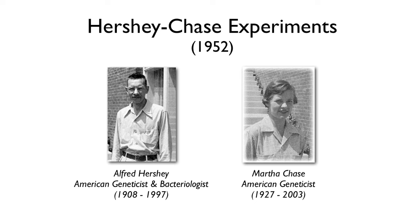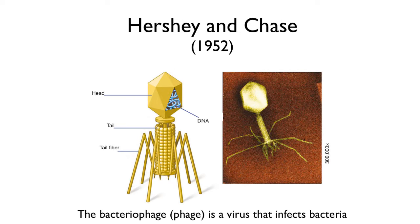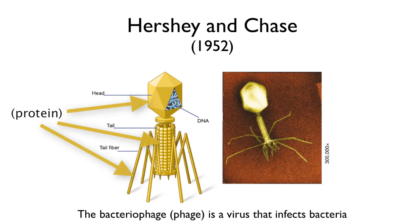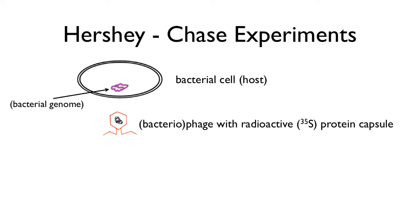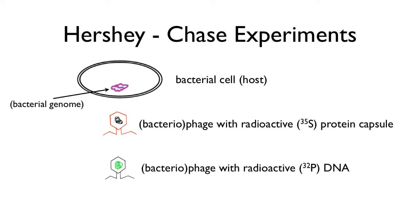Meanwhile, Hershey and Chase had some remarkable experiments going on with phages. Bacteriophages are viruses that infect bacteria — made of either DNA or sometimes RNA, with the rest of the phage made of protein forming the head, tail, and tail fibers. Hershey and Chase labeled bacteriophages one of two ways: either with radioactive sulfur (S-35) to follow the proteins, or with radioactive phosphorus (P-32) to follow the DNA during infection.